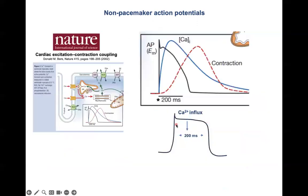Here we see an animation showing the action potential and the calcium channel opening phase. Calcium enters the cell via two different routes: from the extracellular space and from the sarcoplasmic reticulum. The action potential leads to an increase in the concentration of free calcium, and the free calcium mediates the contraction of the heart muscle.